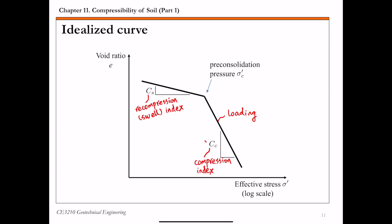And then the unloading and reloading portion, so this straight line with a shallower slope, we call this, the slope of this line is called C sub S. This is called the recompression or swell index. And this turning point here by definition is the preconsolidation pressure we call sigma C prime.